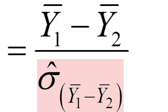The denominator is sigma-hat sub (y-bar one minus y-bar two). Sigma stands for a standard deviation from a population; the hat indicates it's an estimate; and the subscript tells us what it's estimating — in this case it's an estimate of the standard error of the difference of two means, y-bar sub one and y-bar sub two. This is analogous to the standard error we looked at for single sample means.